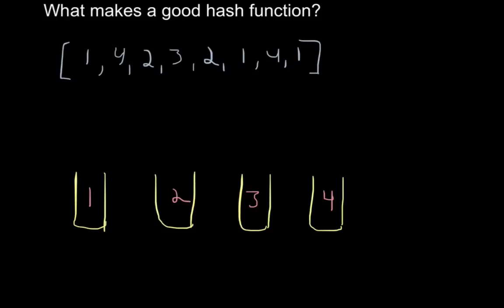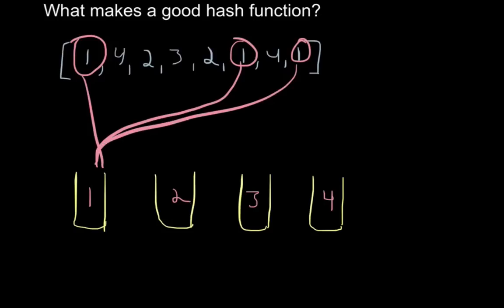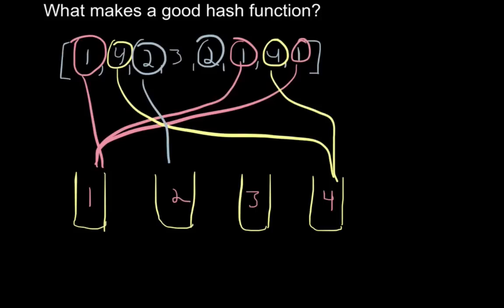In a hash function, the way it would work is you would go through each item and you would designate it to go into a particular bucket. So you'd have 1, 1, 1 just like that. And for your 4s you have these two 4s go just like here - I'm not doing this in any order as you probably notice.